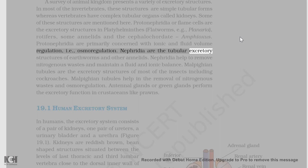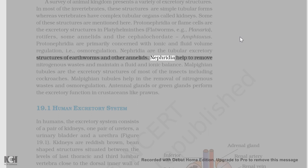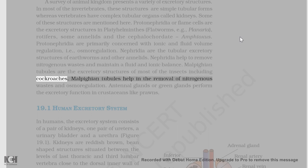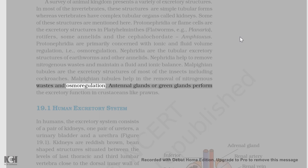Nephridia are the tubular excretory structures of earthworms and other annelids. Nephridia help to remove nitrogenous wastes and maintain a fluid and ionic balance. Malpighian tubules are the excretory structures of most of the insects including cockroaches. Malpighian tubules help in the removal of nitrogenous wastes and osmoregulation.